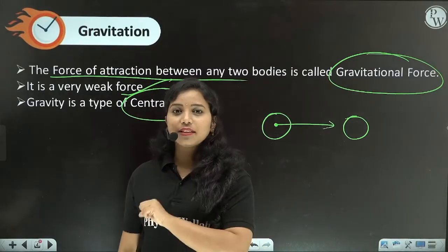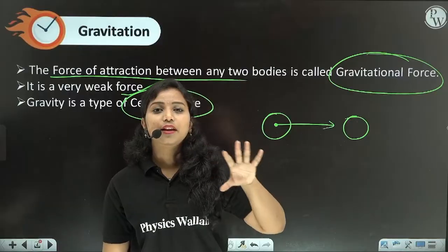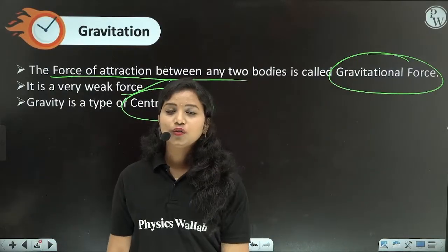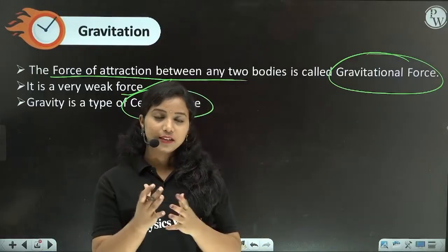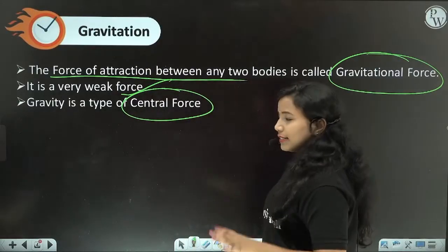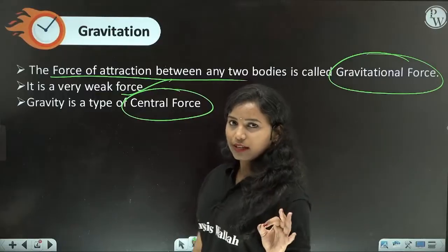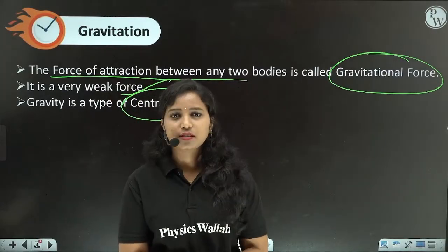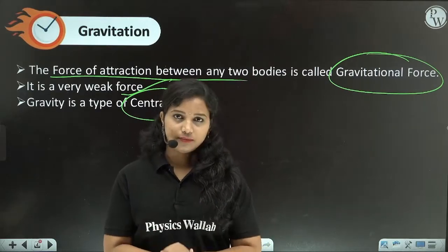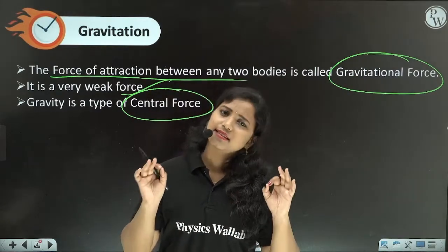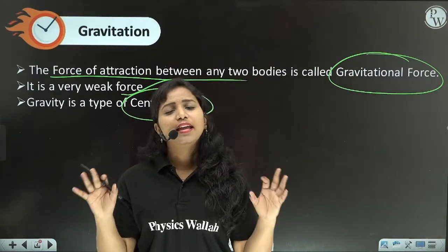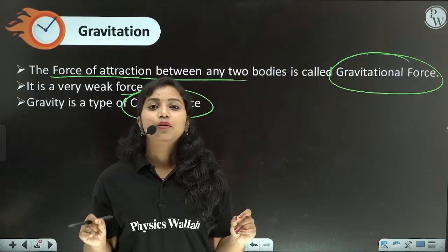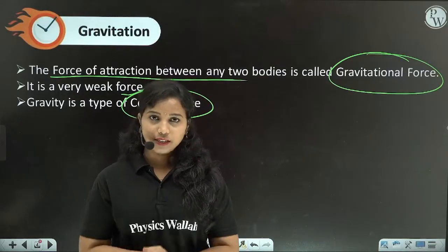This force of attraction works as a force. If the force of attraction works as a force, the body's surface — the center of mass — works as a force. So, the basic points about gravitation: gravitation is an attractive force acting between all objects in the universe. This is a gravitational force.